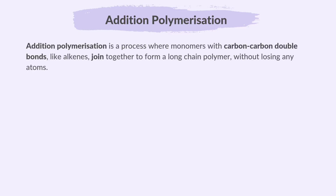Let's learn about the formation of polyethene, which occurs through addition polymerization. Addition polymerization is a process where monomers with carbon-carbon double bonds, like alkenes, join together to form a long chain polymer without losing any atoms. Polyethene is a polymer made by addition polymerization.